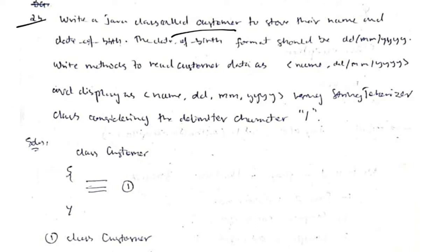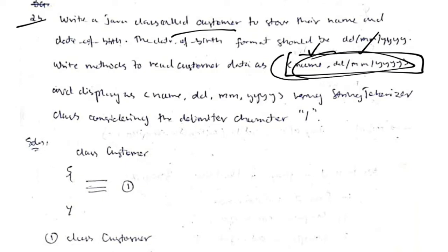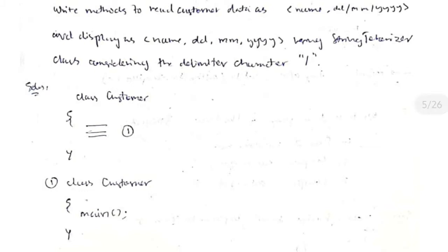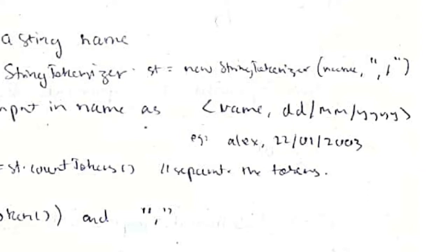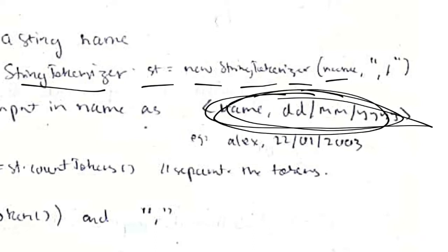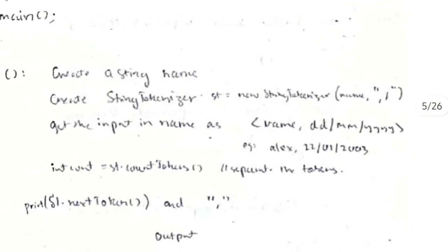Coming to 2b, we have a class Customer where we store name and date of birth. We take input of name and date of birth in a single string, then use a StringTokenizer to separate the values. We initialize it as: StringTokenizer st = new StringTokenizer(name, ...) specifying the delimiter. Wherever we see a comma or a slash, we separate the values there.